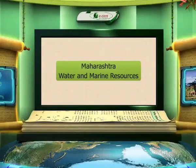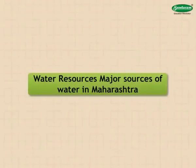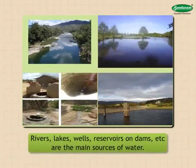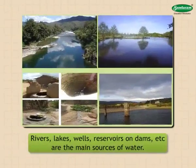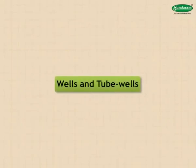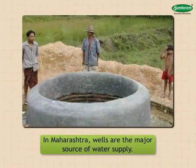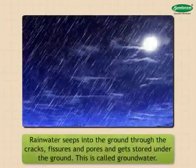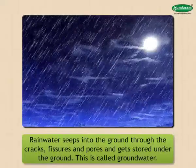Maharashtra water and marine resources — water resources: the major sources of water in Maharashtra are rivers, lakes, wells, and reservoirs on dams. Wells are the major source of water supply. Rainwater seeps into the ground through cracks, fissures, and pores and gets stored underground — this is called ground water. This water becomes available through wells and tube wells at a number of places.